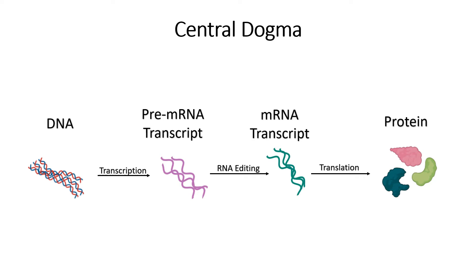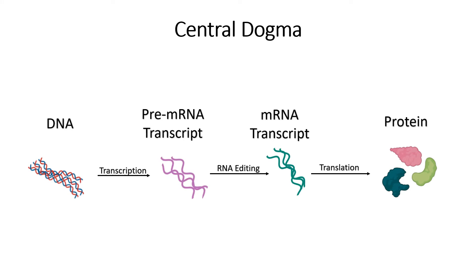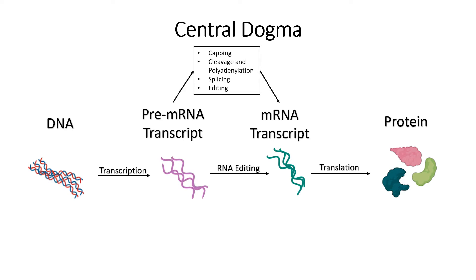Let's start by looking at where RNA editing fits into the central dogma of biology. The traditional central dogma includes just three steps: DNA, mRNA, and protein. However, in eukaryotes, when DNA is initially transcribed, the initial product is not a mature mRNA, but pre-mRNA. Pre-mRNA then undergoes extensive processing that may include capping, cleavage and polyadenylation, splicing, and in some cases, editing.